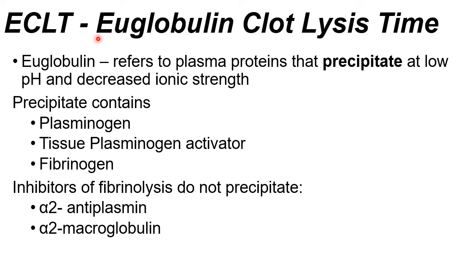The next test is the ECLT or euglobulin clot lysis time. Euglobulin is a member of your plasma proteins — it can precipitate at low pH and decreased ionic strength, meaning it should easily precipitate in an acidic environment. That precipitate separates proteins involved in the coagulation process. The precipitate contains plasminogen, tissue plasminogen activator (TPA), and fibrinogen. The proteins that do not precipitate are the inhibitors of fibrinolysis, such as alpha-2-antiplasmin and alpha-2-macroglobulin.